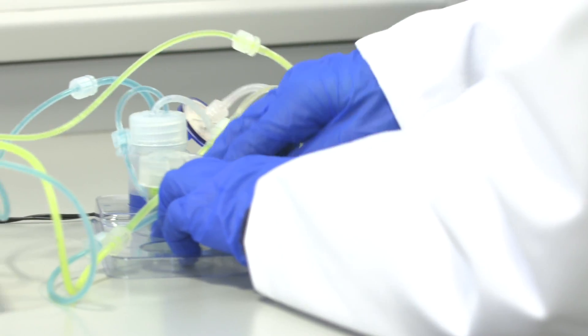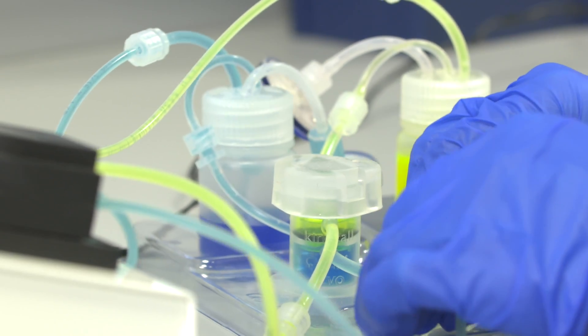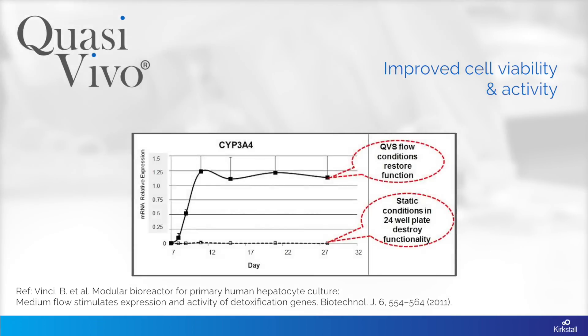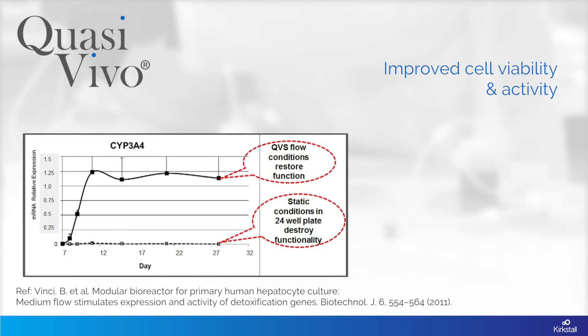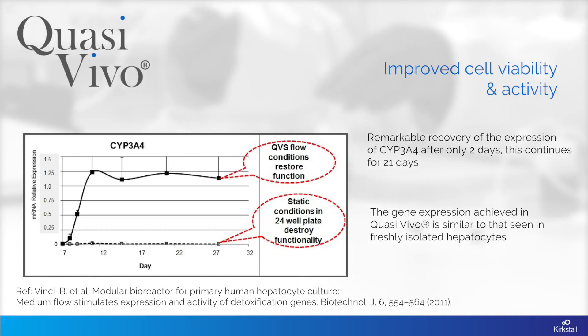Quasivivo has also been demonstrated to improve cell viability by up to seven times. This graph shows the gene expression of the important cytochrome P450 CYP3A4. This experiment was done using primary human hepatocytes cultured under static and flow conditions and shows gene expression relative to their expression in freshly isolated hepatocytes. In traditional static conditions, expression of this gene is almost zero. Under flow conditions, there is a remarkable recovery of the expression of CYP3A4 after only two days, and this continues for at least 21 days. The gene expression achieved in Quasivivo is similar to that seen in freshly isolated hepatocytes.